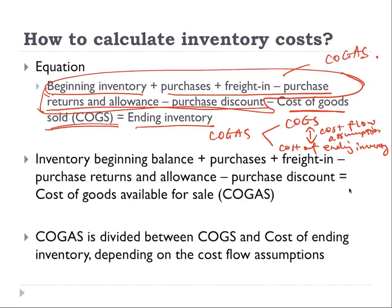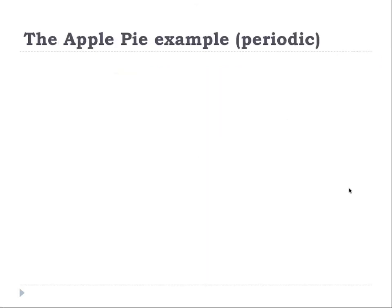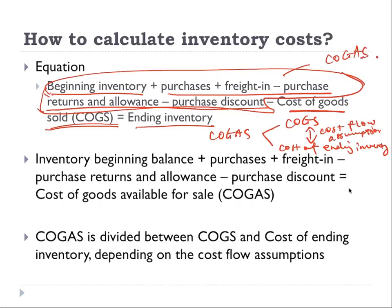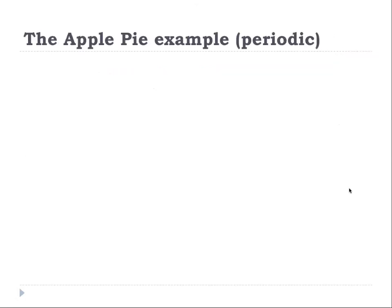In this class and chapter, we are mostly interested in the periodic inventory system, though we will also talk about the perpetual inventory system. Most of the illustrations here are for the periodic system. So what is the cost flow method, and how does it link to cost of goods sold and cost of ending inventory? Here's an example.